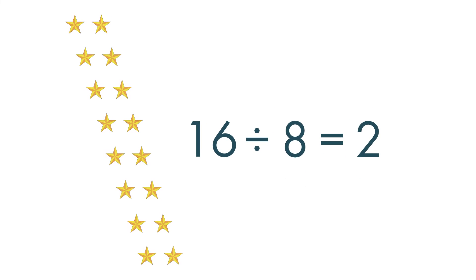Division is related to multiplication. If we divide the 16 stars into 8 groups, there are 2 stars in each group. 16 divided by 8 is equal to 2.